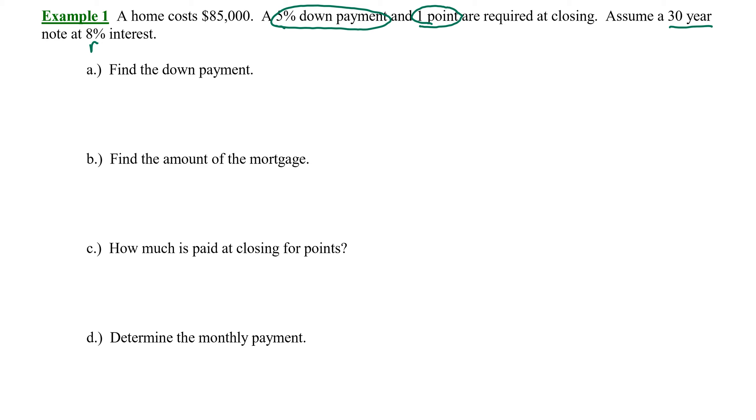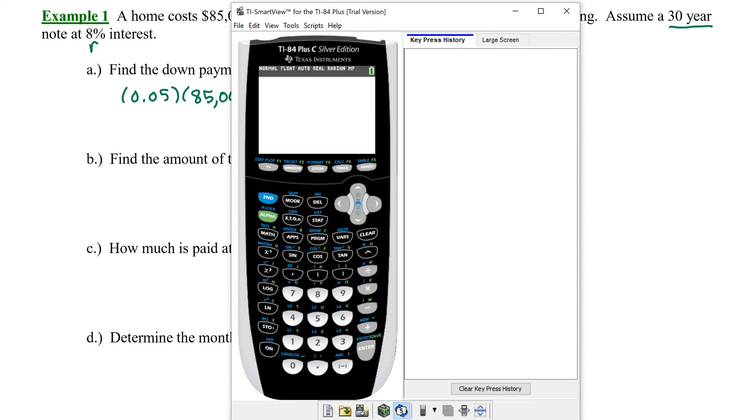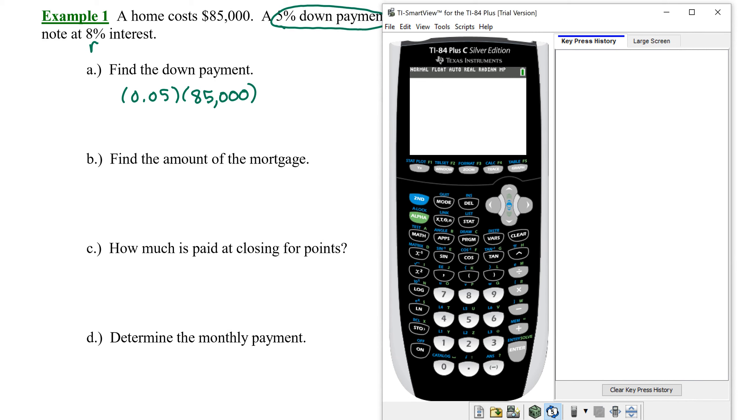So let's calculate first the down payment. We have a 5% down payment. So we need to calculate 5%, that's 0.05 of, remember of means multiply, $85,000. So let's see what our down payment is going to be. 0.05 times $85,000.